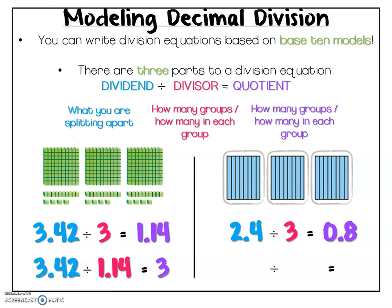I could also write an equation where my quotient is three. In this case, when my quotient is three, that means I'm taking those two and four tenths and dividing it into groups of eight tenths, which tells me that I end up with three full groups. Either one of those equations would be an accurate equation for this model.